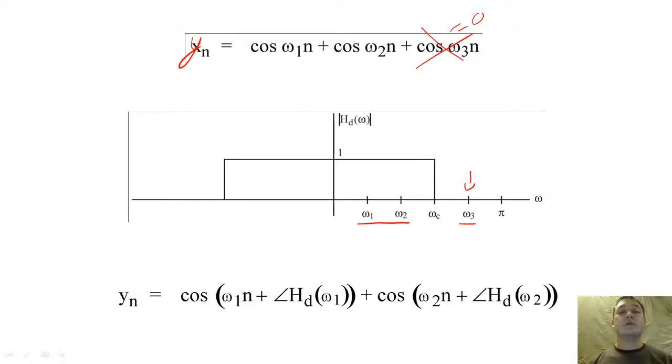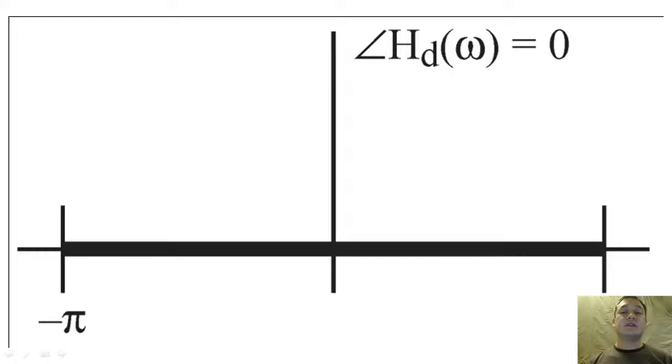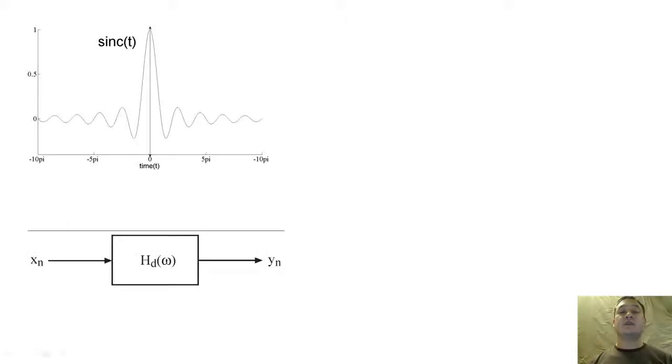More generally, we want our ideal low-pass filter to have zero phase for all frequencies. In order to achieve such a low-pass filter with zero phase, the impulse response would need to be an infinitely long sinc function.